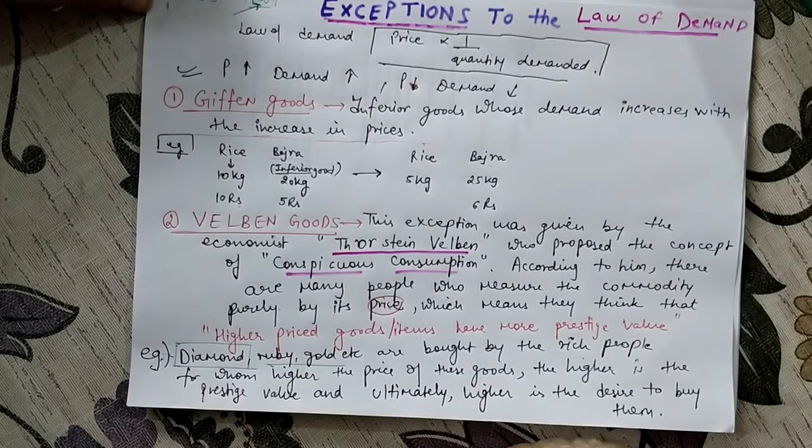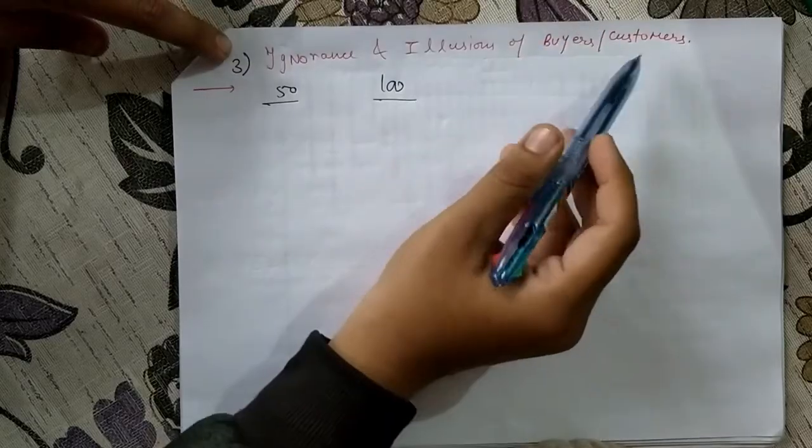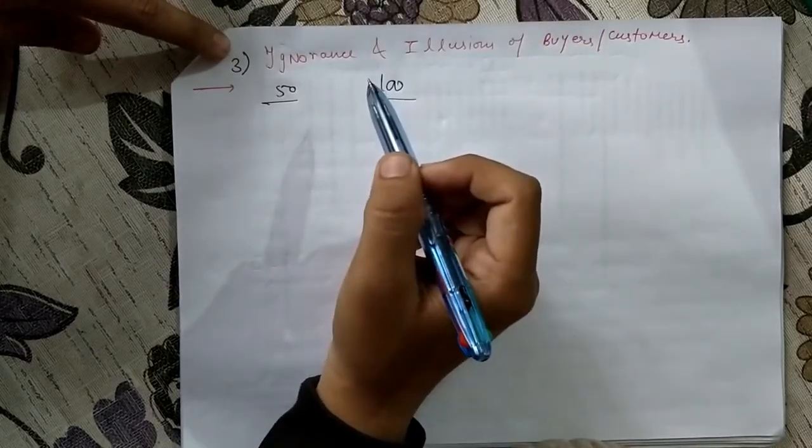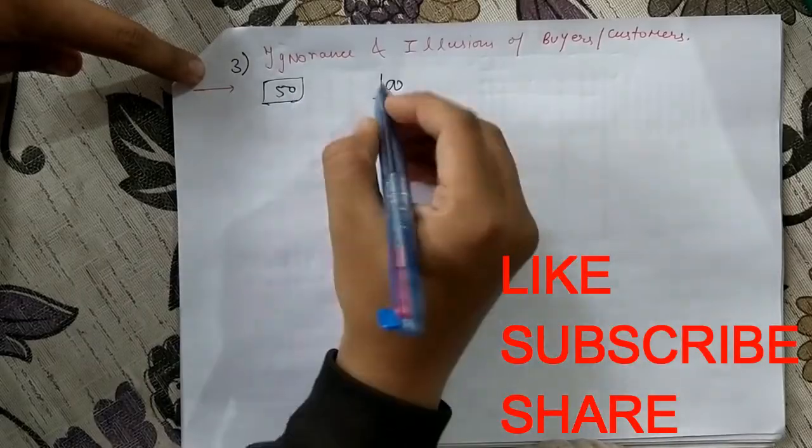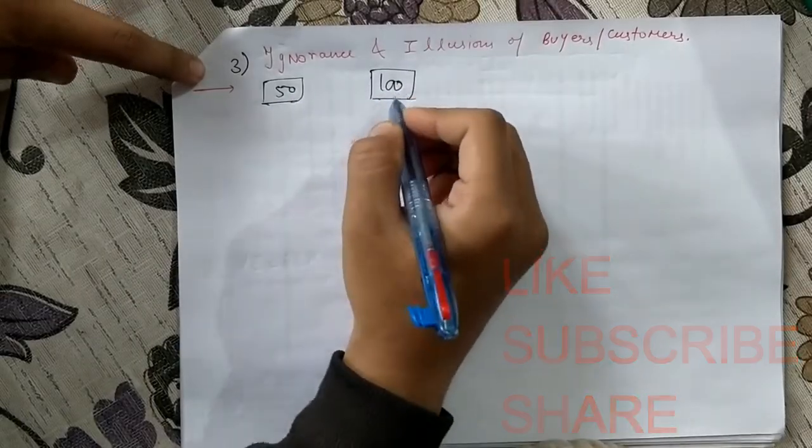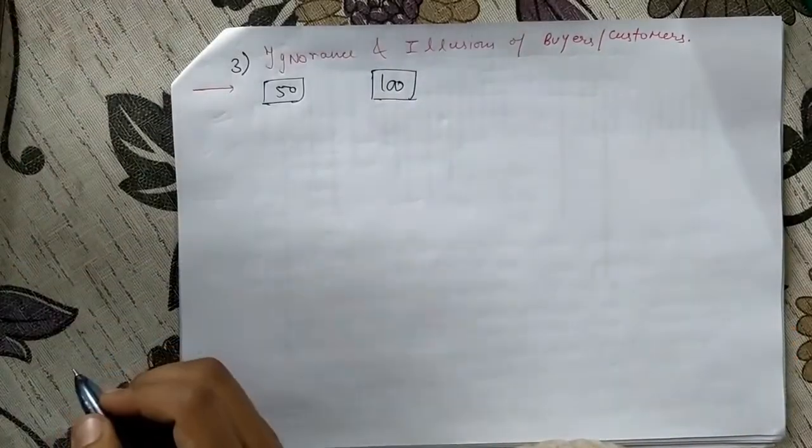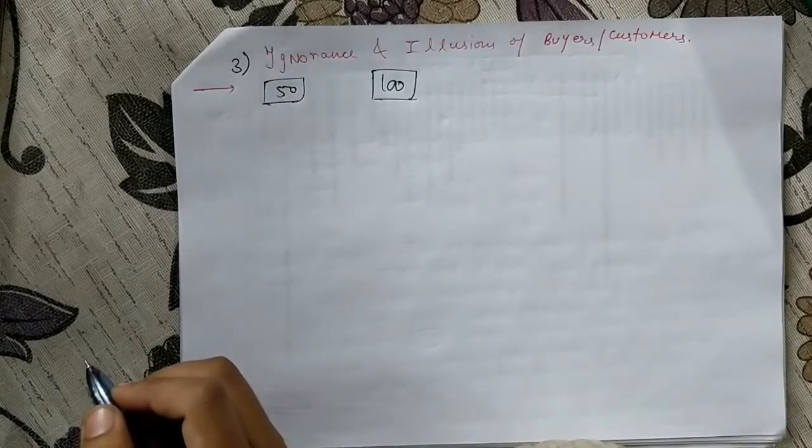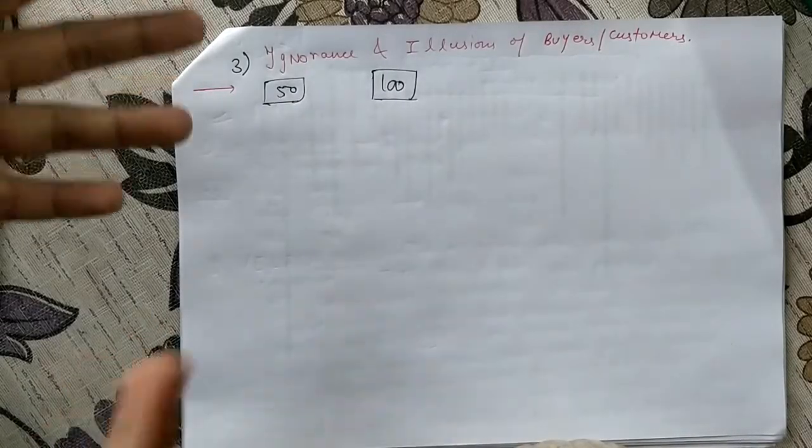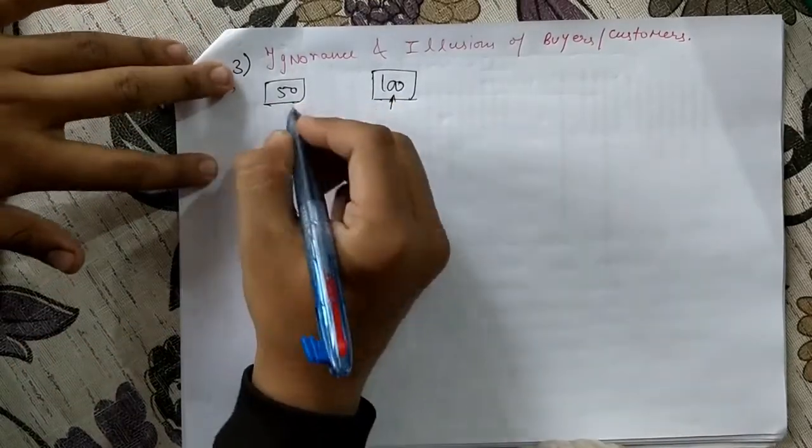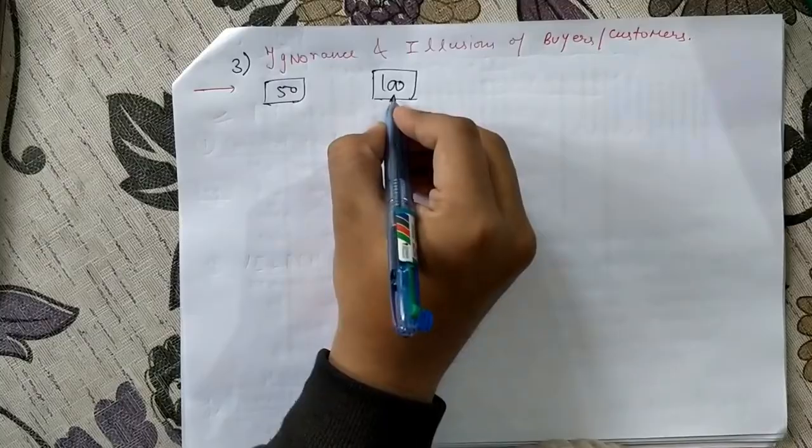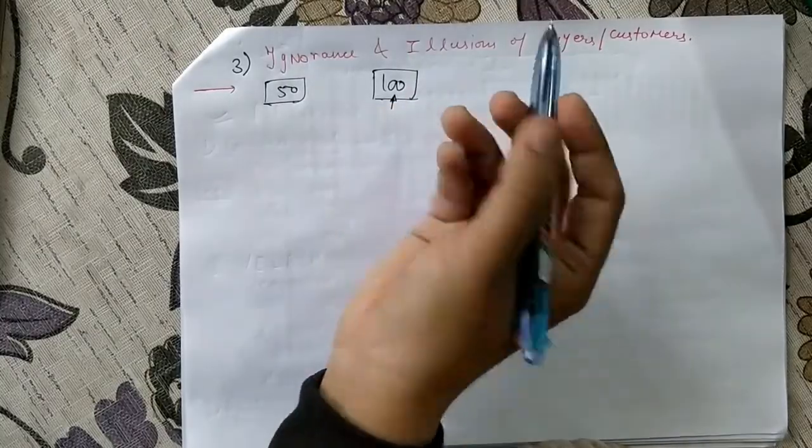The third one is ignorance and illusions of buyers and customers. Let's take an example: there's an apple seller who sells it for 50 rupees, and there's another seller who sells apples for 100 rupees. Now there's an illusion of the people who think that he is giving apple for 100 rupees, so quality of this apple will be better than that one. So this is the case which we call the illusion of buyers.